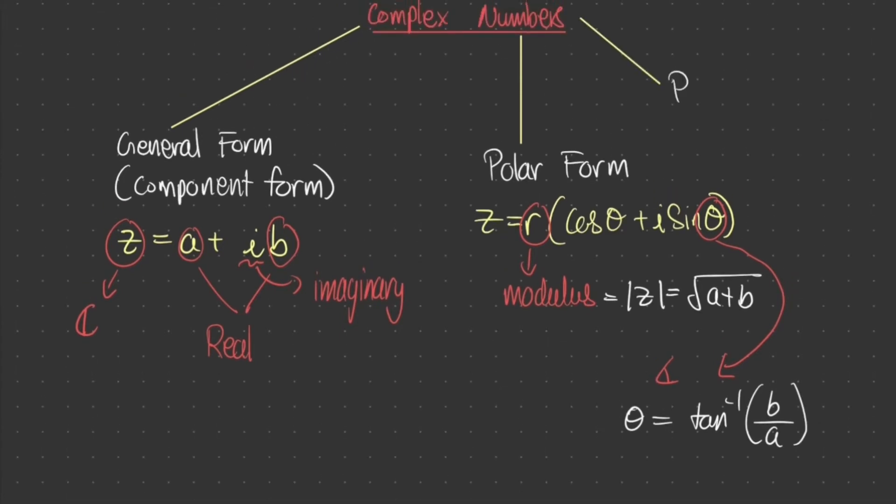And the final form we need to look at is called the polar exponential form. This can be represented as z is equal to r e to the power of i theta. Remember, r is your modulus and theta is your angle.